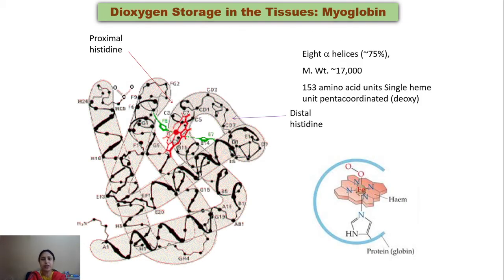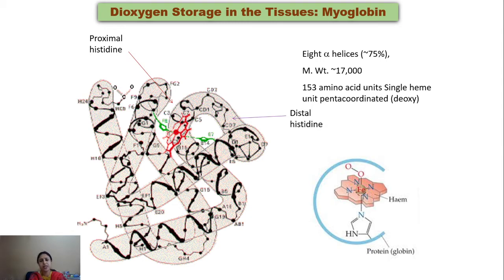Myoglobin, used for dioxygen storage in muscles, has a similar structure to hemoglobin. The difference is that myoglobin is a monomeric molecule whereas hemoglobin is a tetrameric molecule. In myoglobin, the ferrous ion is also attached to the four nitrogen atoms of the porphyrin ring, with the fifth position attached to the histidine residue and the sixth position free to attach with dioxygen. The proximal and distal histidine units also play an important role in the myoglobin molecule.